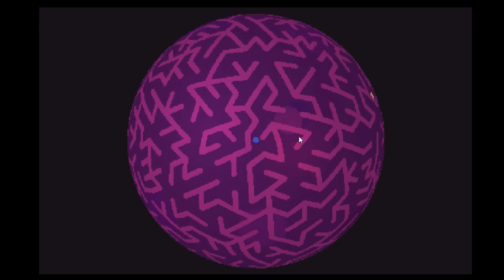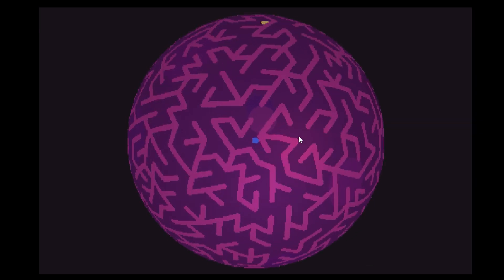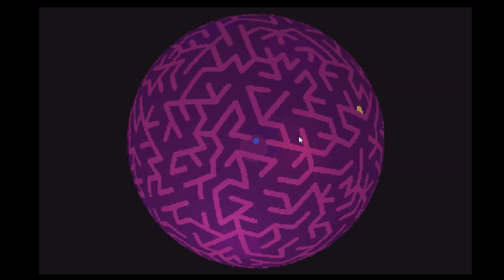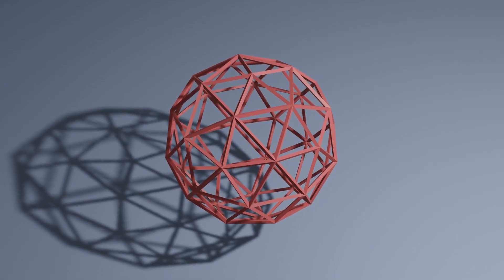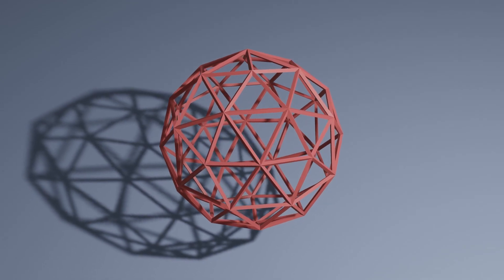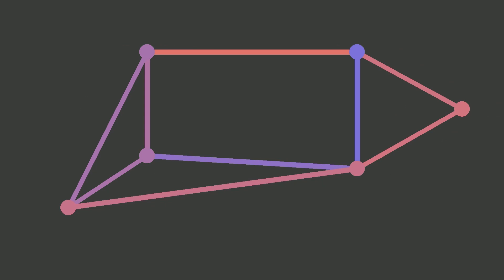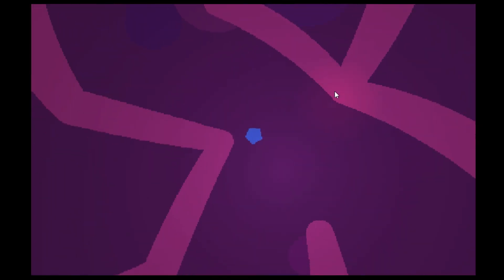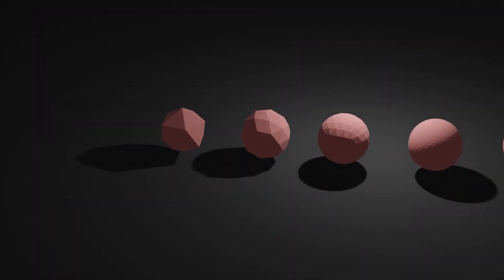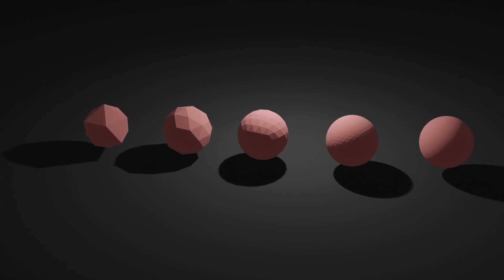Recently I made some mazes on a sphere, so here's how I did it. I started with the edges of an icosahedron and made a graph out of them. I made a random graph and then constructed an MST. This only provides mazes of fixed size, but we can subdivide to get mazes of different sizes.